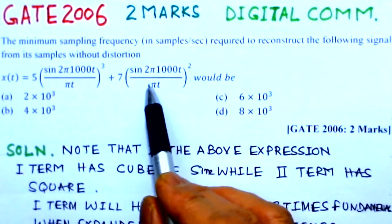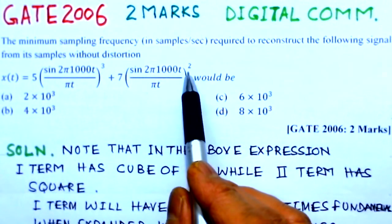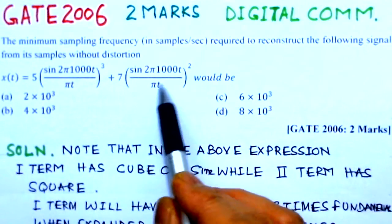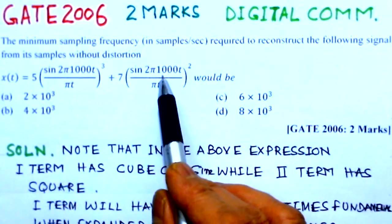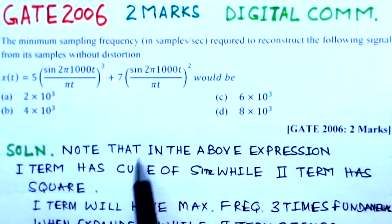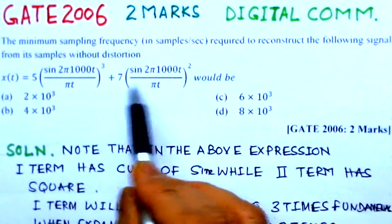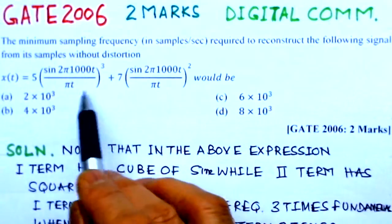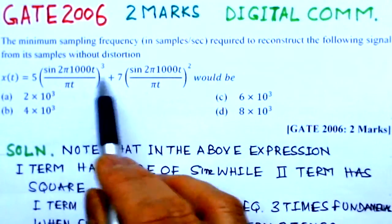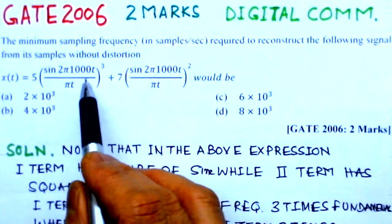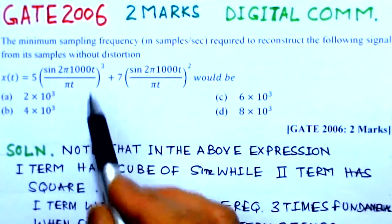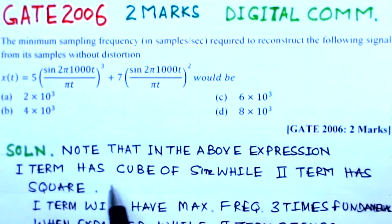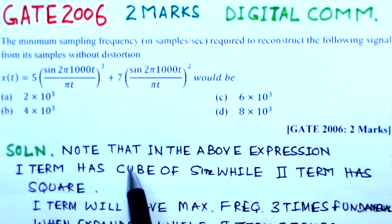Similarly, in the second term sin²(2π1000t), it will have maximum frequency component which is twice this fundamental frequency. So if you observe both the expressions, the maximum frequency which will exist in this signal will be three times the fundamental frequency. So let us see the solution to this problem.